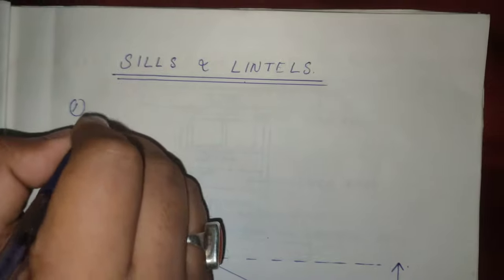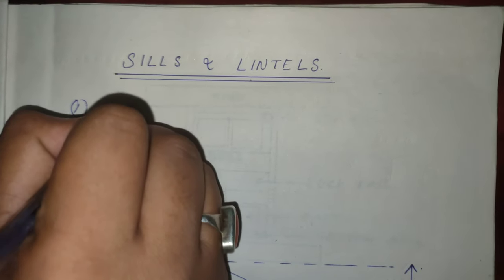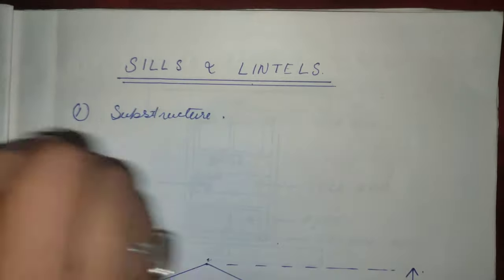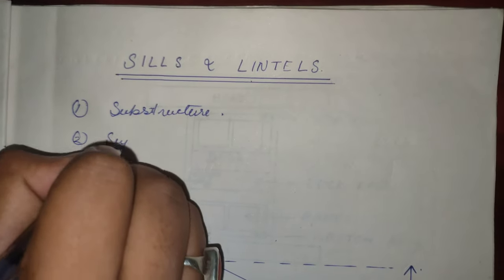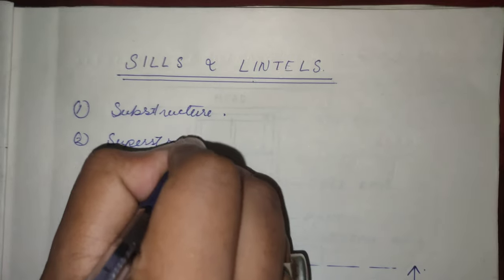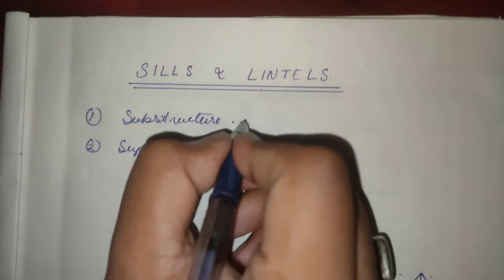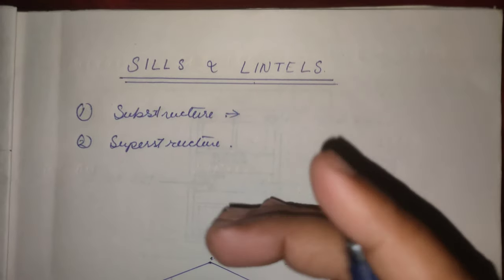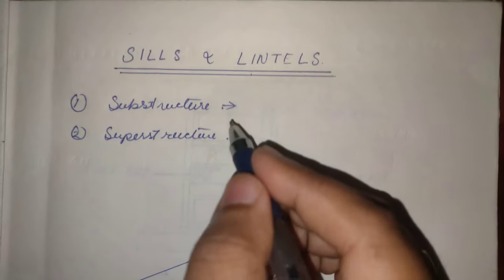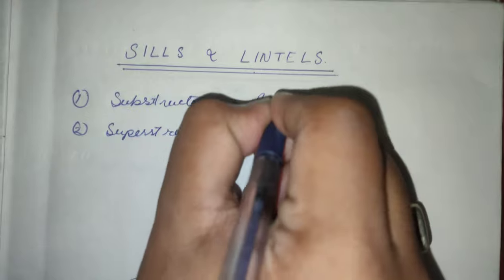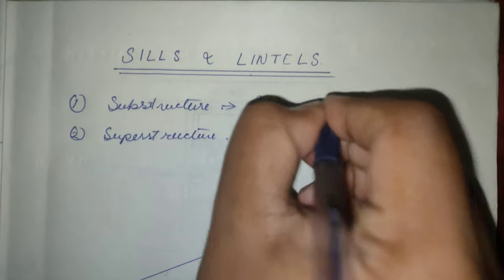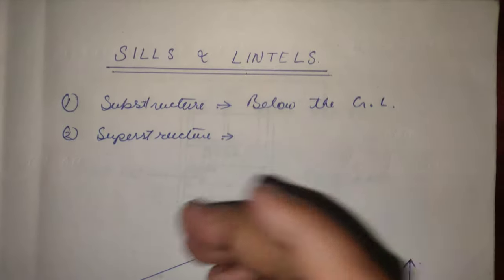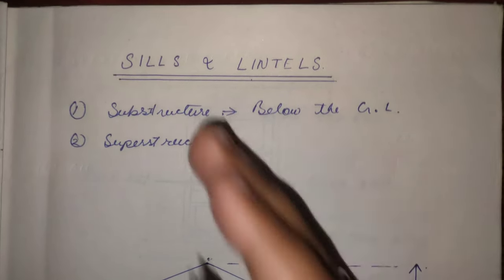Number one, substructure, and number two, superstructure. The components of the building which are below the ground level lie in the substructure, and the components of the building which are above the ground level lie in the superstructure.